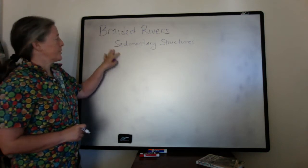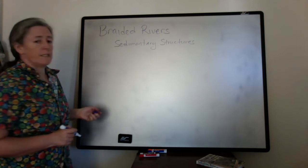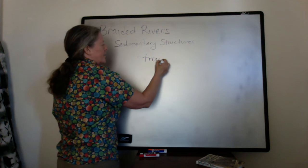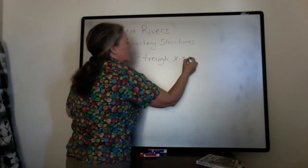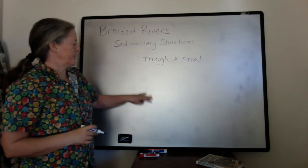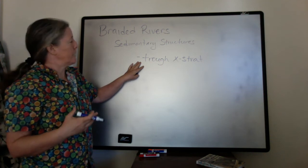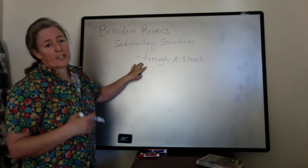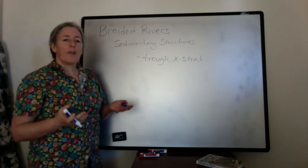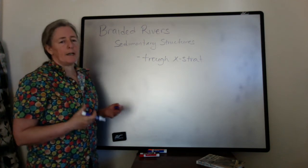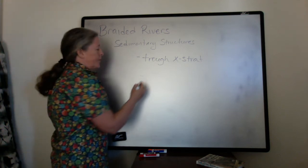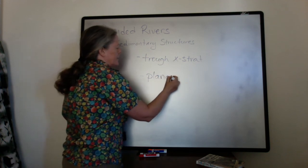The sedimentary structures are related to both the grain size and the flow speed. Structures characteristic of braided rivers often include trough cross stratification, which comes from the migration of irregular dune shapes. Because the flow speed varies dramatically within the channel, you almost never get straight-crested dunes forming. On the edges of the bars where you might have granules to sand-sized grains, the flow speed can be very high and you can get upper planar lamination.